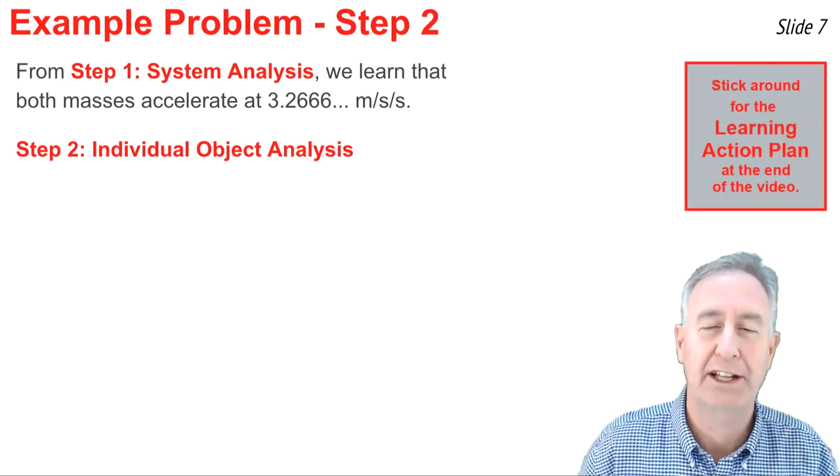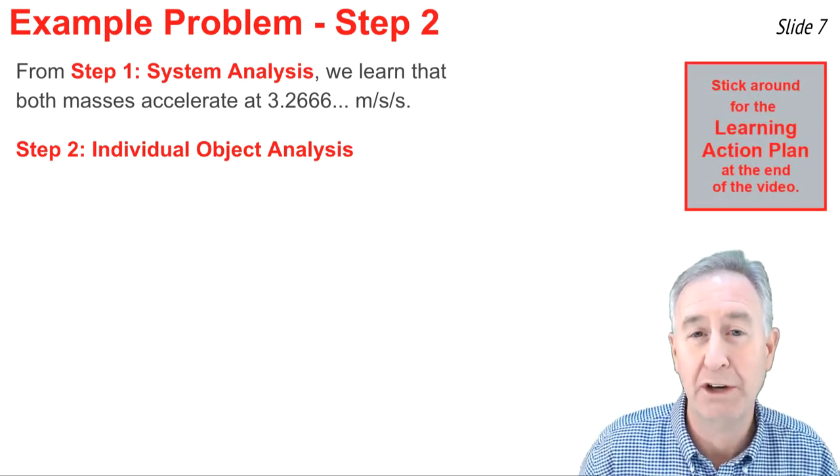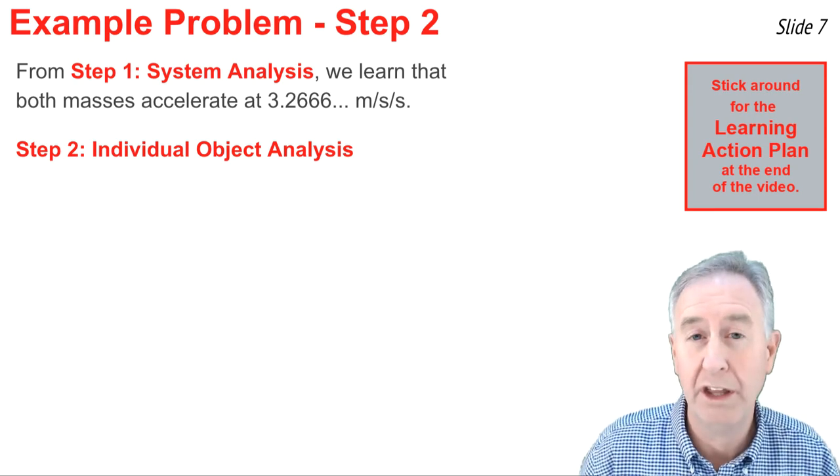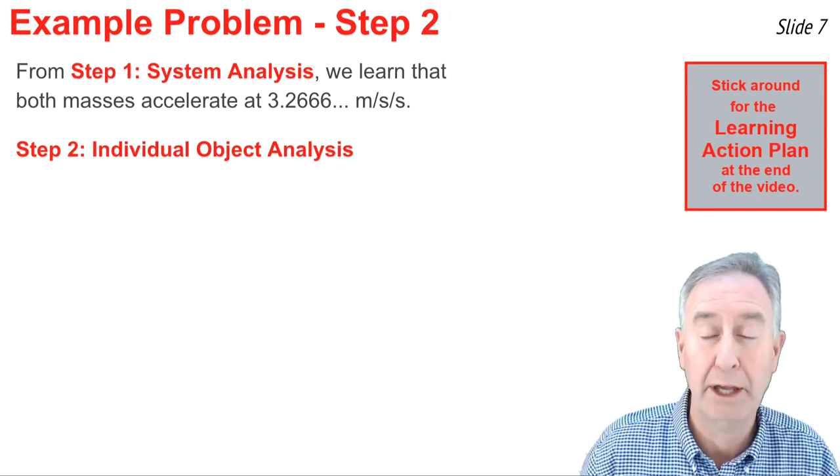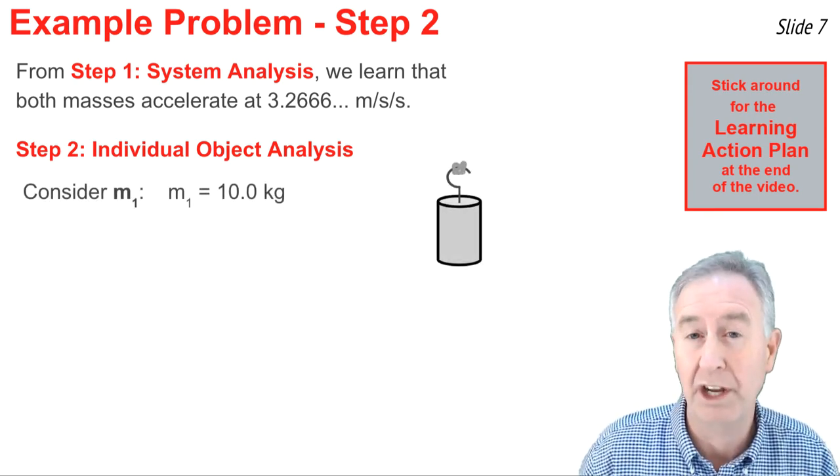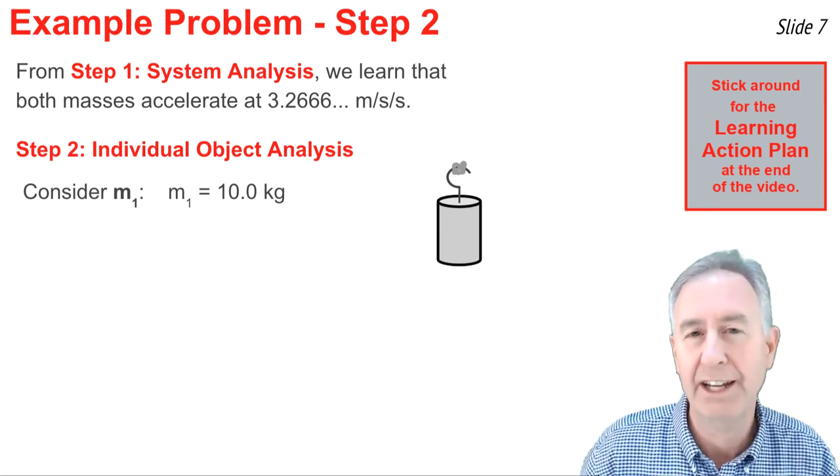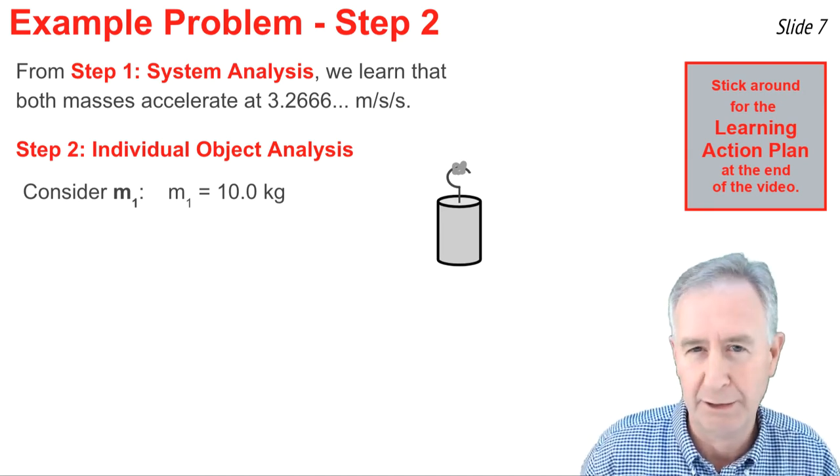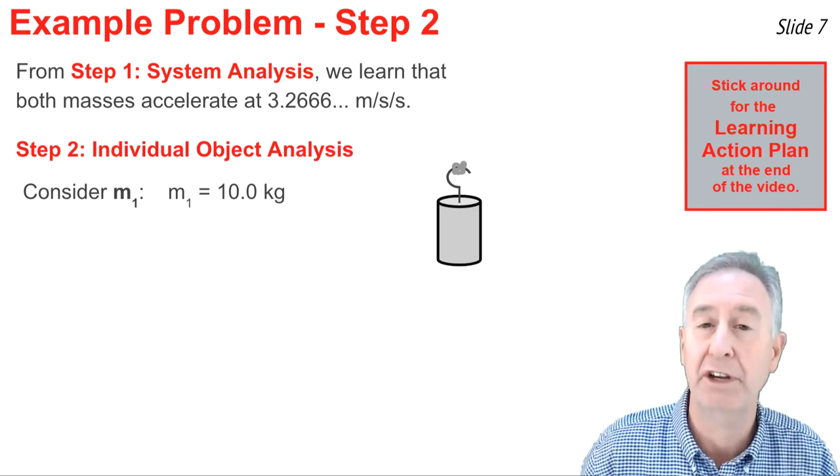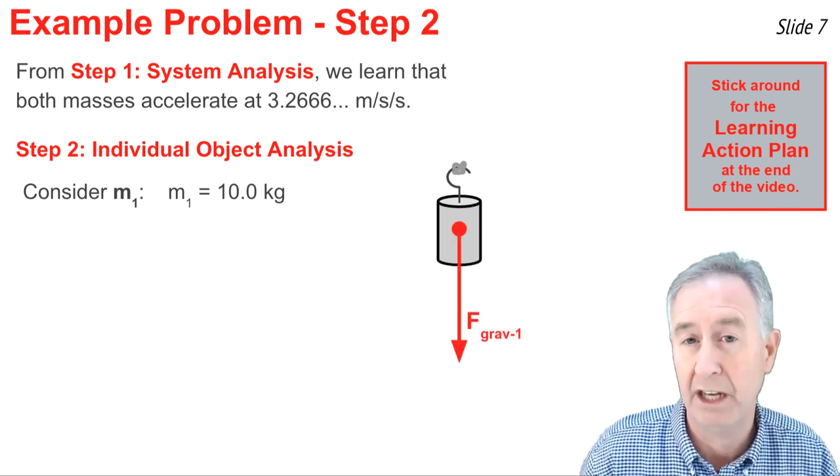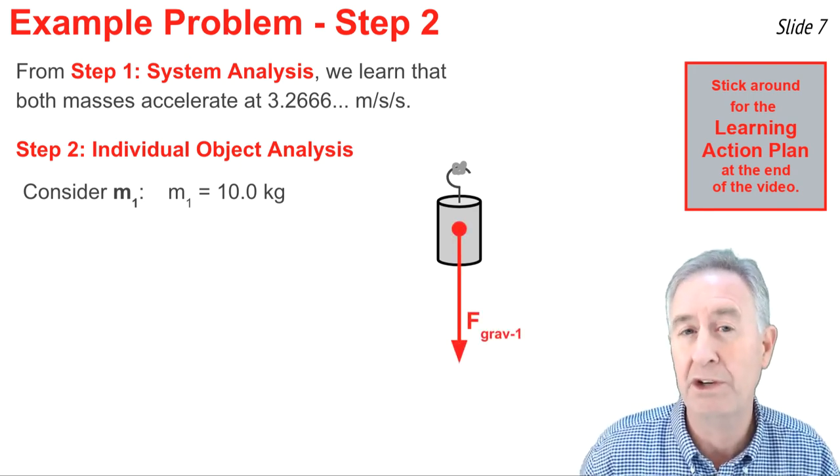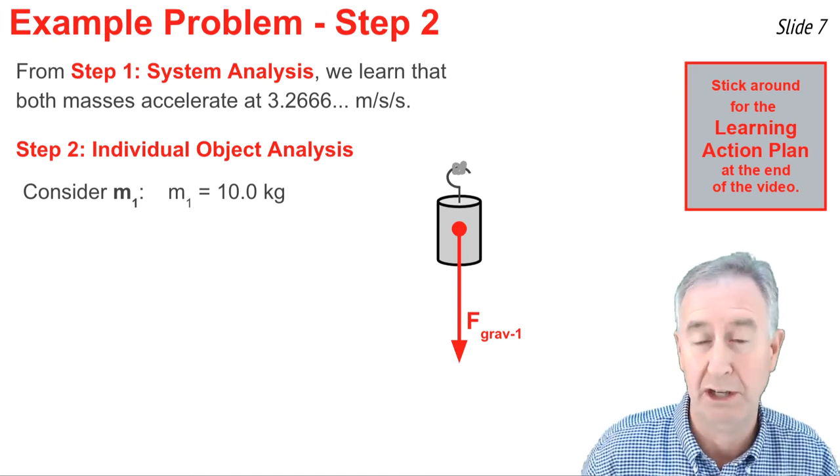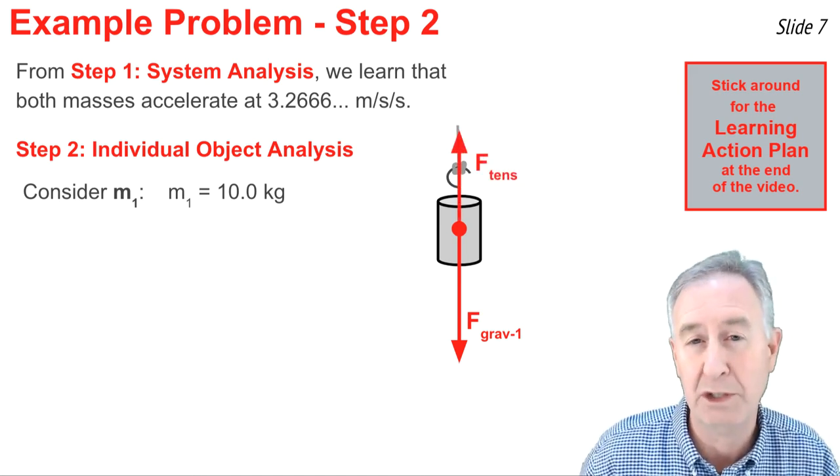Now that we've determined the acceleration, we'll use an individual object analysis to determine the tension in the string. This is when you pick either one of the objects, and it doesn't matter which one you pick. I just happen to pick m1 here, the 10 kilogram mass. Later, I'll do it again, picking the 5 kilogram mass. But for this 10 kilogram mass, it's accelerating downwards due to the force of gravity that acts upon it. But there's another force on this mass. There's a string touching it, which pulls upwards on the mass with a tension force.